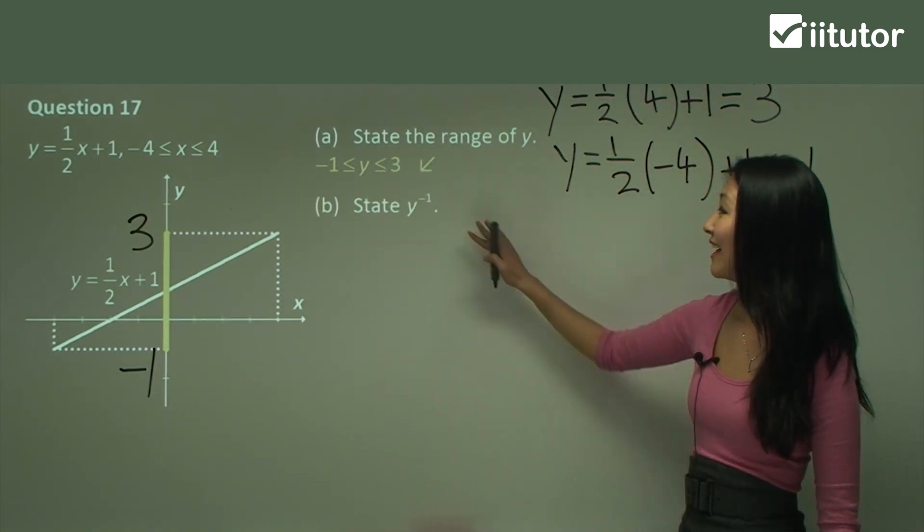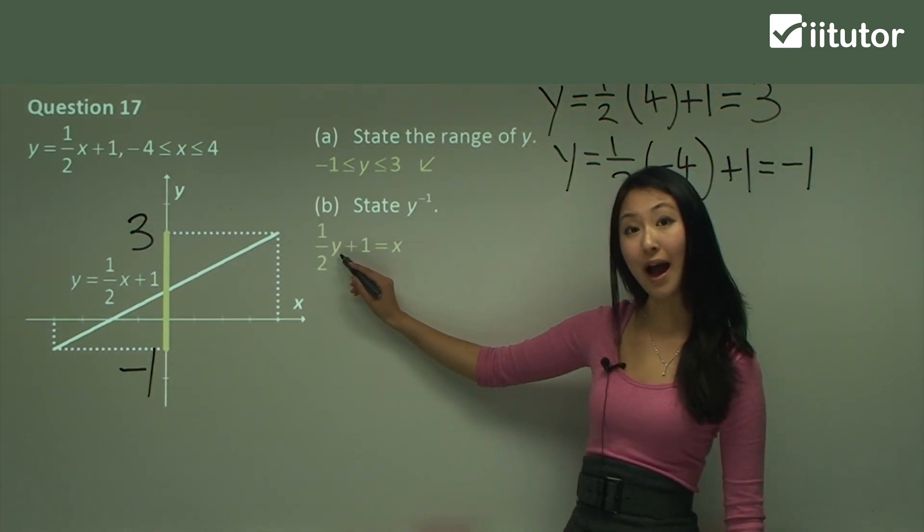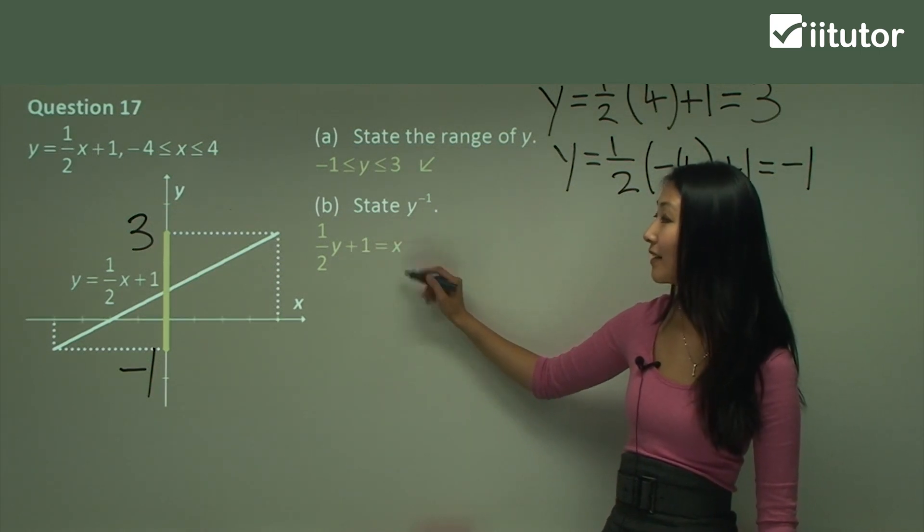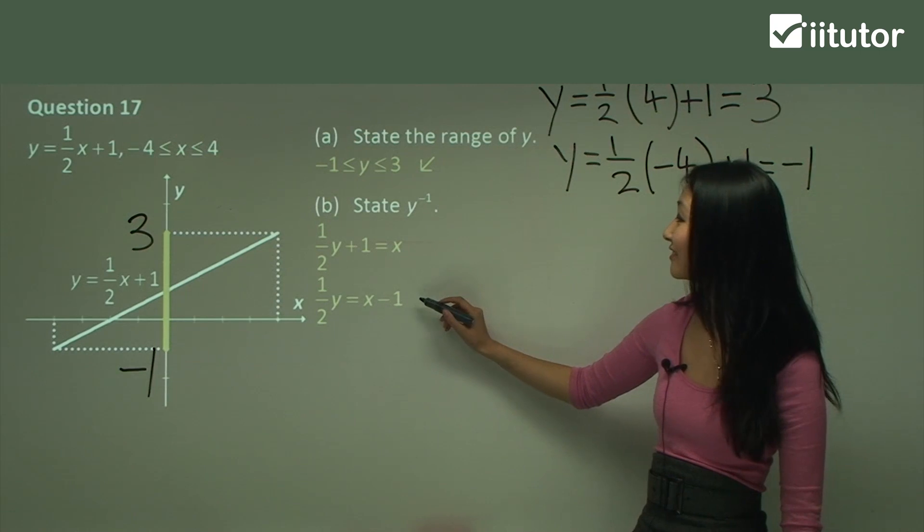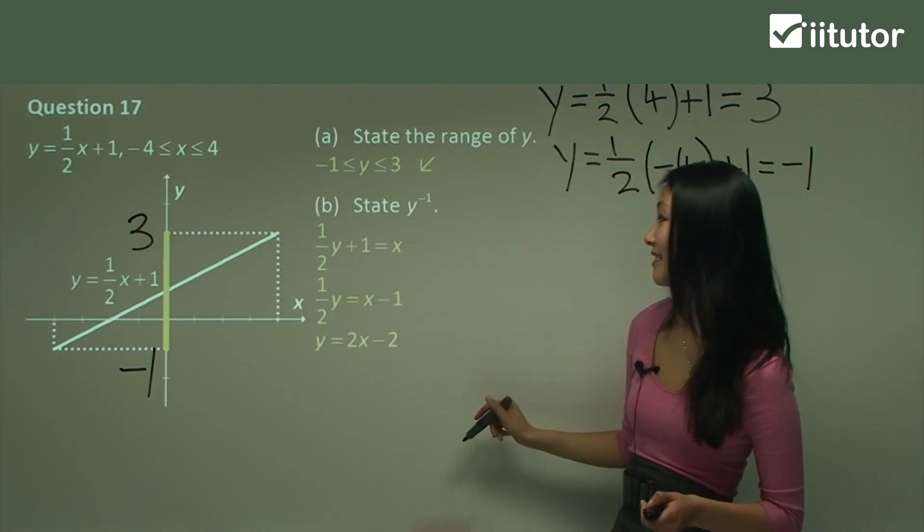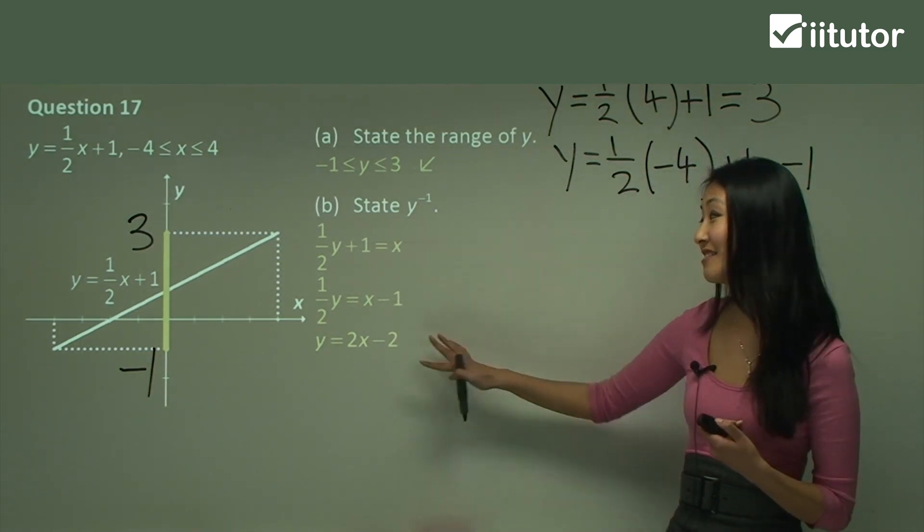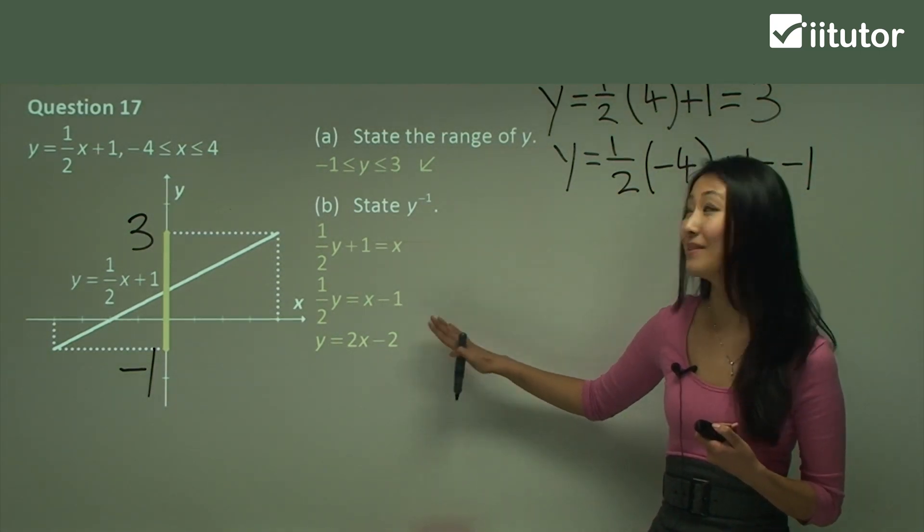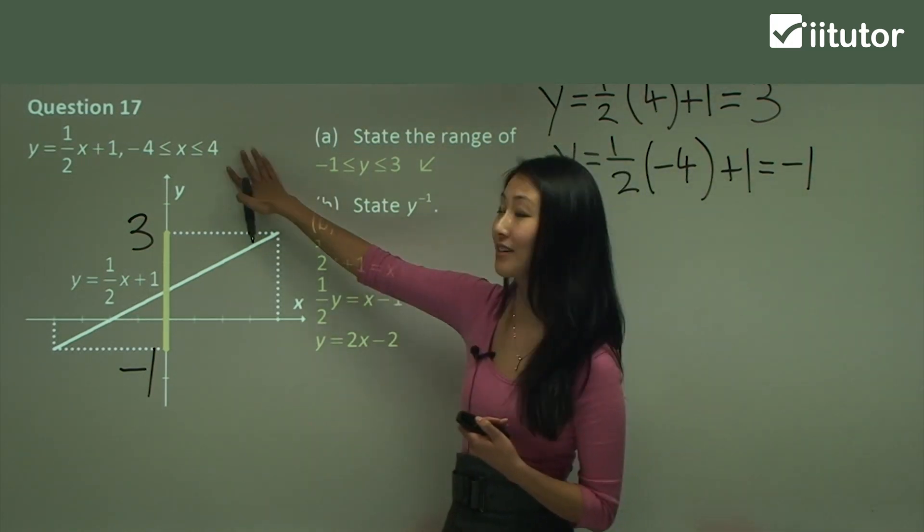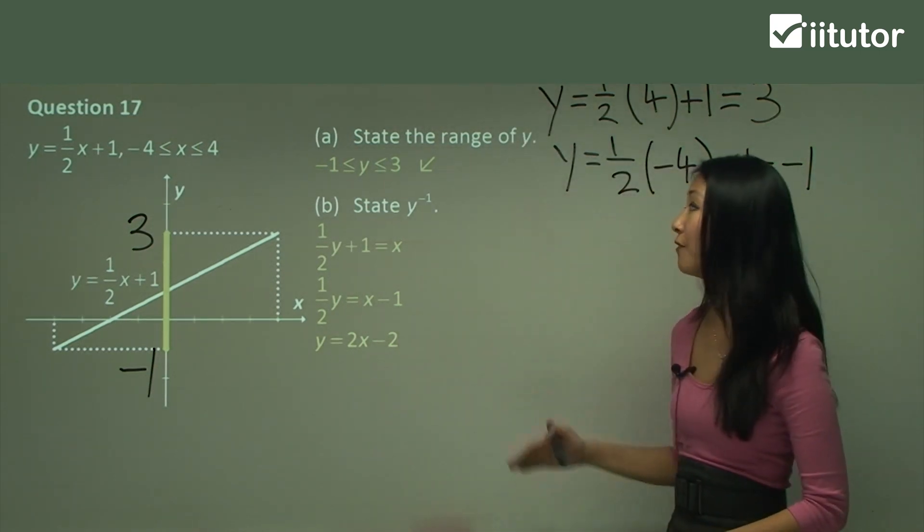Okay, let's find the inverse of this function. So switching my x for y and my y for x, now I'm going to rearrange it. So move 1 to the other side, multiply everything by 2. So remember everything there, so it becomes 2x minus 2. Now, this isn't your complete answer, is it? Because you can see here that the function was given to us has only been defined from 4 to negative 4. So therefore, the inverse of our function must also have a domain which it's defined by.